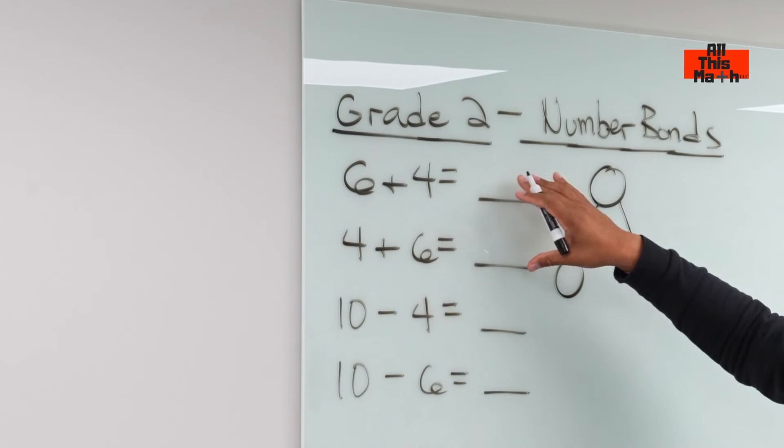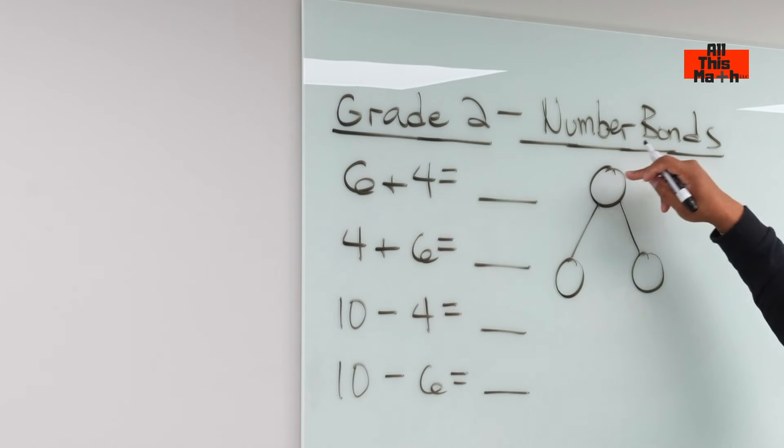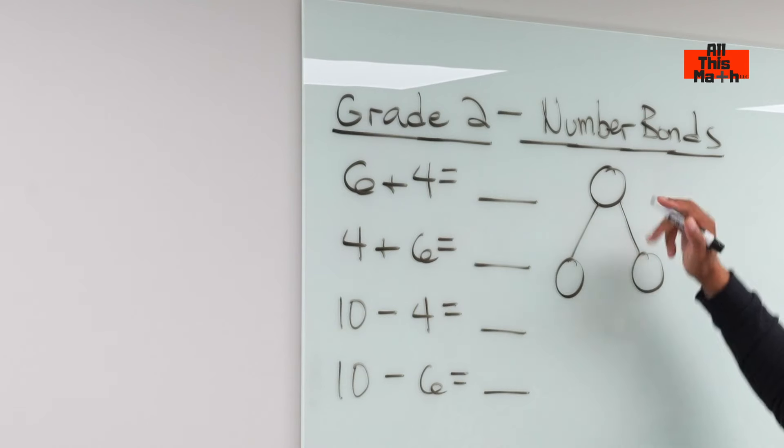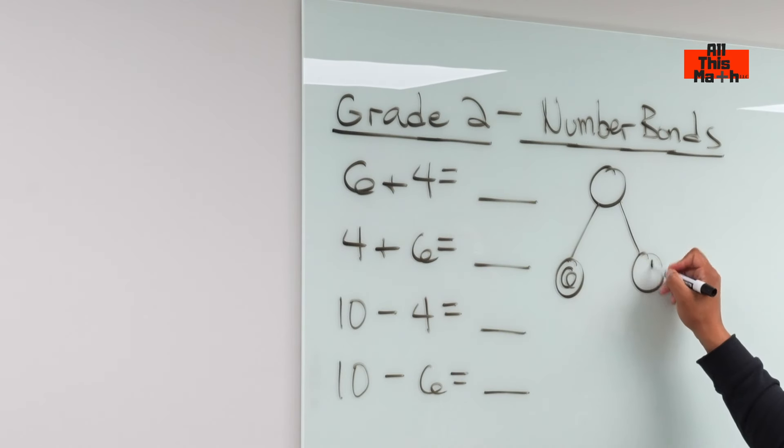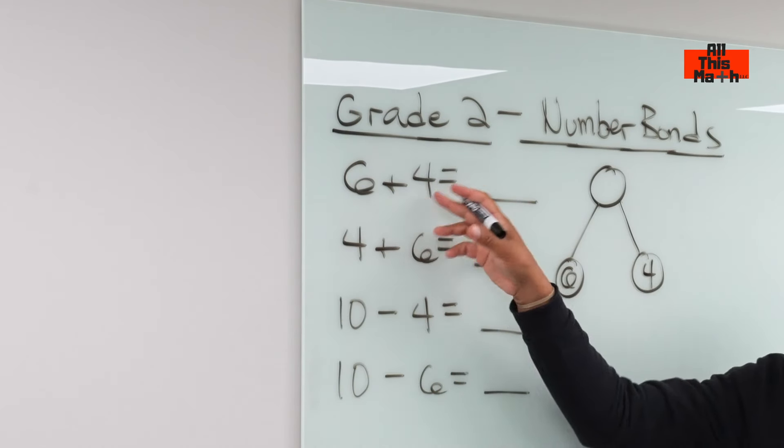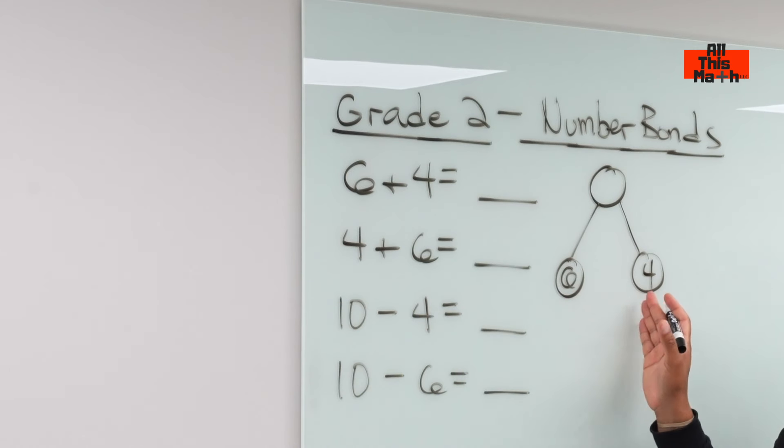So then we have six plus four. We know it's going to equal a larger number. So the larger number goes in the top bond, the two smaller numbers, in this case, the addends, we call those addends, the numbers in an addition problem. We have six and four, and we have six plus four.